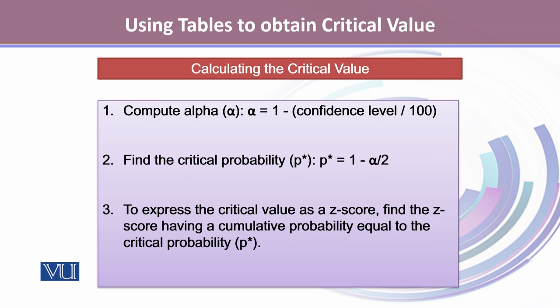To express the critical value as a z-score, we first find the z-score having a cumulative probability equal to the critical probability.